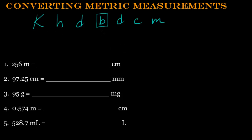And basically, that King Henry died by drinking chocolate milk helps you remember the prefixes in the metric system. So the important thing to remember, you can see I have a box around the B. This stands for the base unit. And depending on what you're measuring, that is your starting point. So that could be grams if you're dealing with mass, liters for volume, and meters for measuring length or distance.